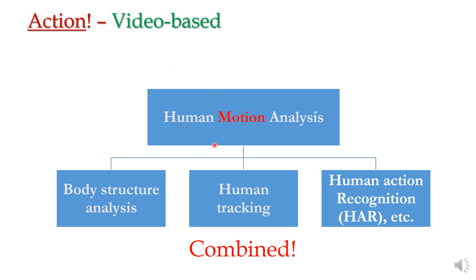Video-based and sensor-based action recognition falls under human motion analysis, which can be split into three categories. First, body structure analysis: using OpenPose techniques or Kinect sensors we can get body joint points, known as skeletons, for human movement understanding. Second, human tracking — a decade ago this was for single persons, but nowadays we track multiple people in crowds, facing problems of occlusions and missing detections.